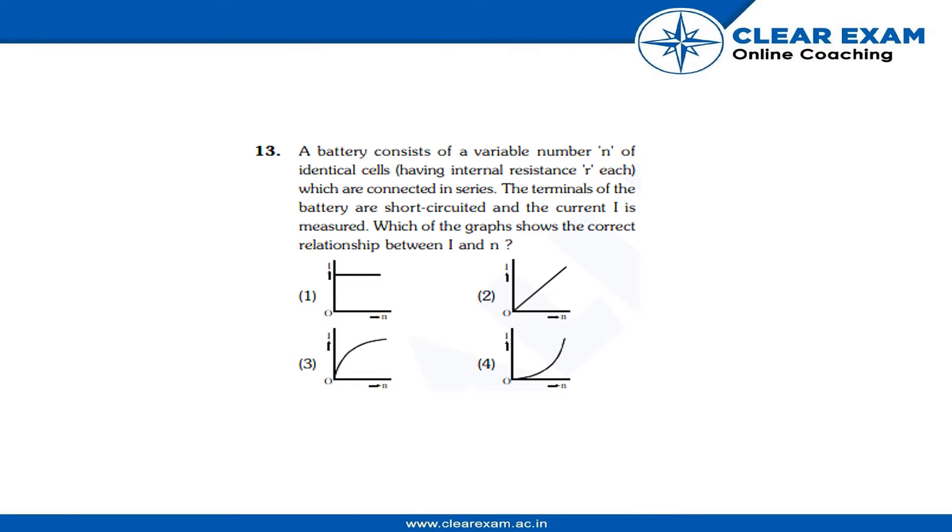Hey guys, in this question a battery consists of a variable number n of identical cells having internal resistance r each which are connected in series. So this is the circuit here. There are n batteries—n identical cells, not battery.